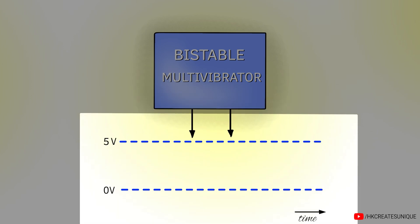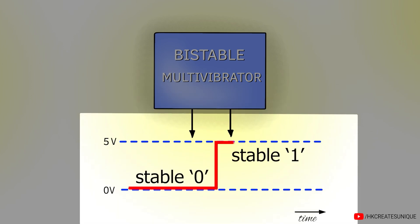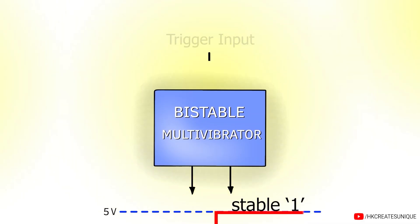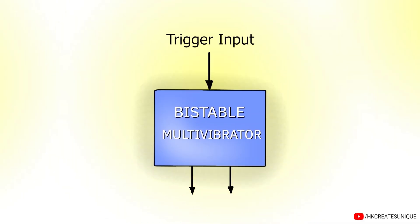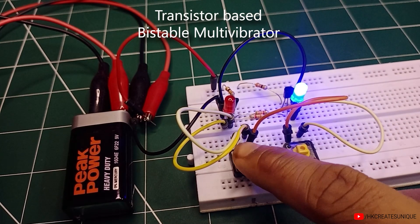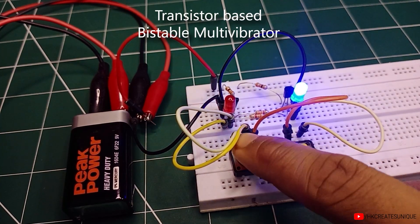The output can exist in either stable 0 or stable 1 form. This transition from 0 to 1 or 1 to 0 can be made by externally triggering the circuit. In this video, we will learn how a transistor-based bistable multivibrator circuit works. Let's get started.